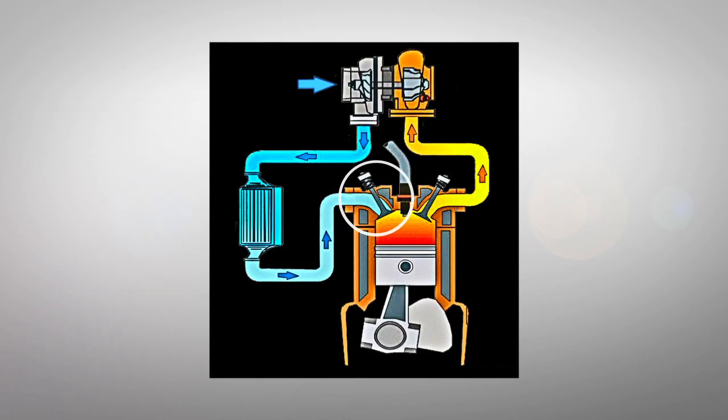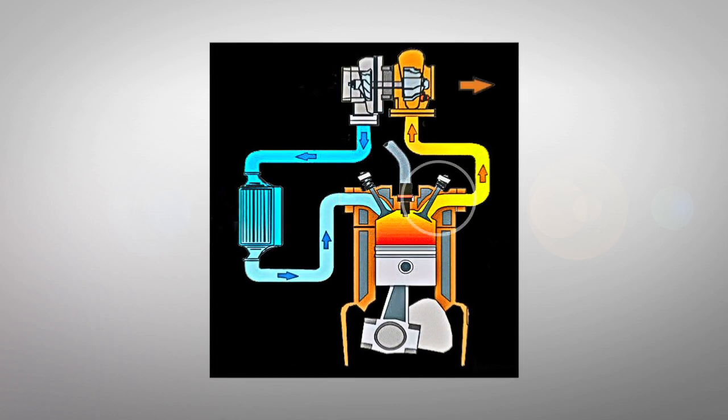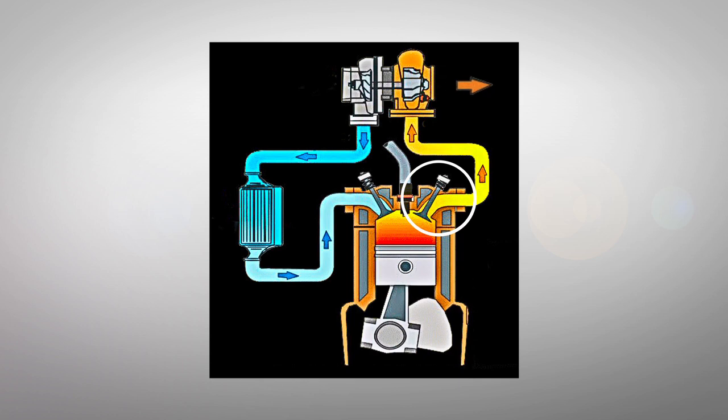Intake valves open to admit fresh air into the cylinder and then close to hold the air in during the compression, power, and exhaust strokes. Exhaust valves are closed during the intake but opened during the exhaust strokes to allow exhaust gases to exit the cylinder.